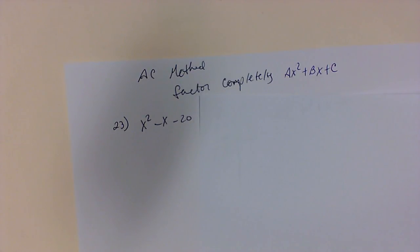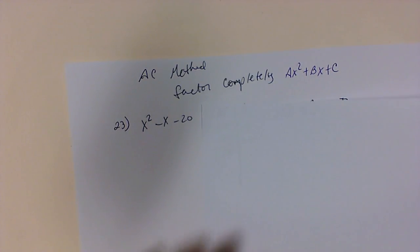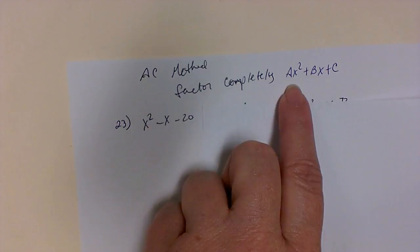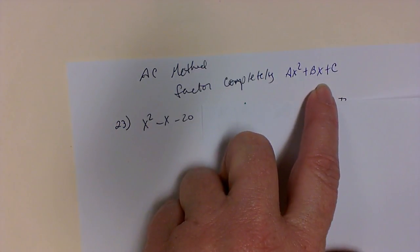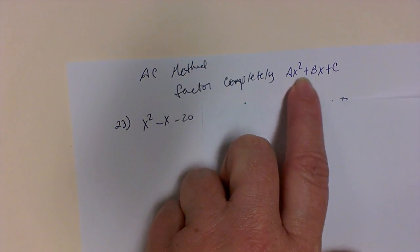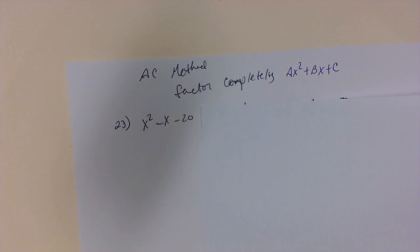We are doing factoring with the AC method. Basically we're looking at equations that start with ax squared plus bx plus c, and we're going to take our letters from a and c.